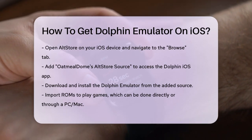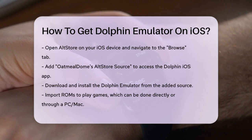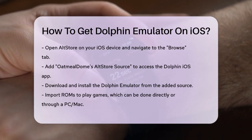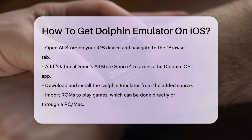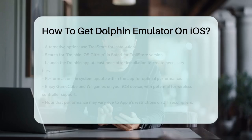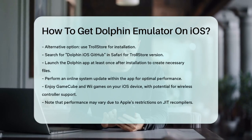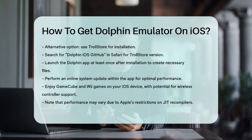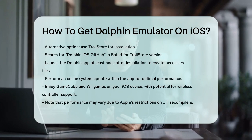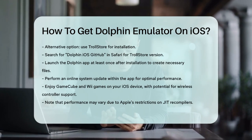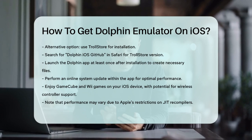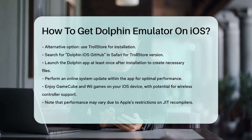If you prefer not to use AltStore, you can also use the TrollStore, another third-party app store. To do this, search for Dolphin iOS GitHub in Safari, go to the Releases section, and download the latest version of Dolphin for TrollStore. Then open the file and choose TrollStore to install the app. Once the app is installed, make sure to launch it at least once to create the necessary files. You may also need to perform an online system update within the app to ensure everything runs smoothly.